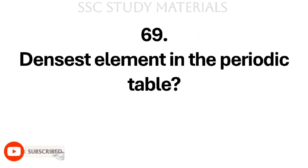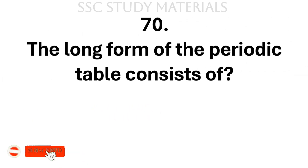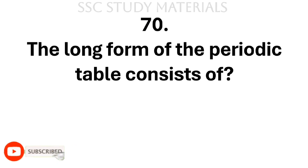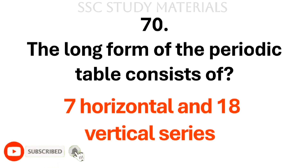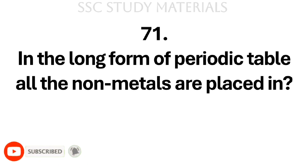Question No. 69: Densest element in the periodic table? Answer: Osmium. Question No. 70: The long form of the periodic table consists of? Answer: 7 horizontal and 18 vertical series. Question No. 71: In the long form of the periodic table, all the non-metals are placed in? Answer: P block.